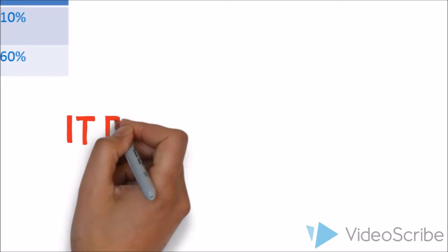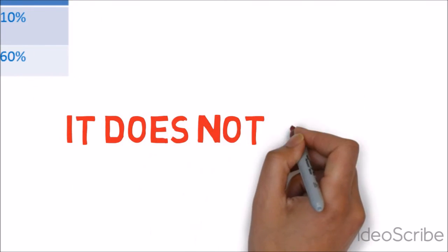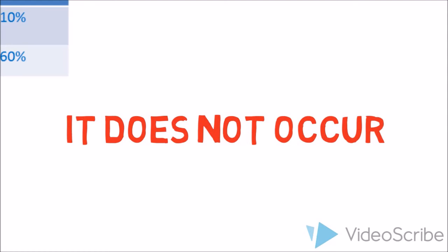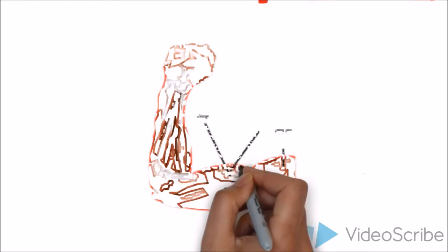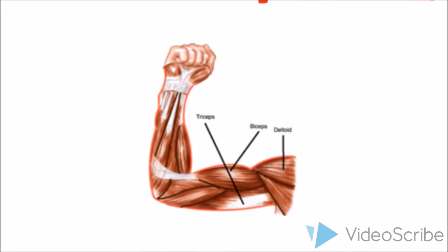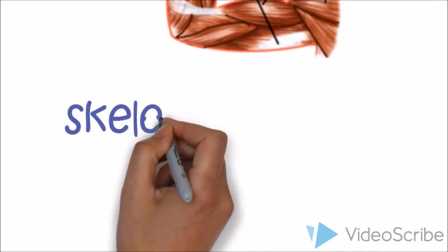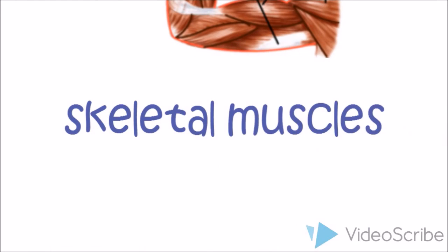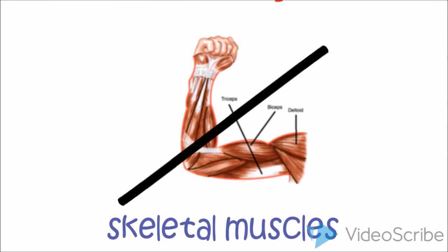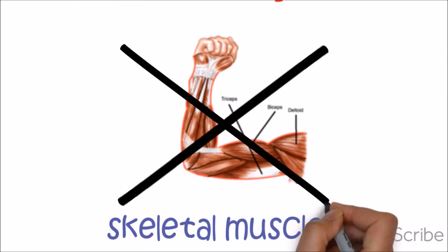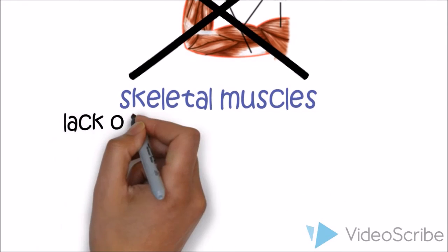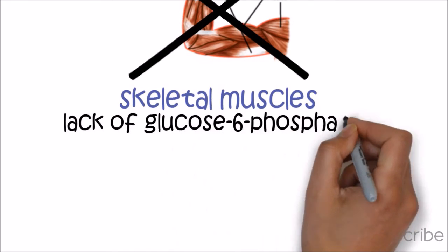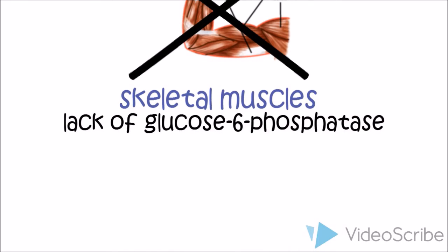Gluconeogenesis does not occur in skeletal muscles, because skeletal muscles lack the enzyme glucose-6-phosphatase, which is necessary and important for gluconeogenesis.